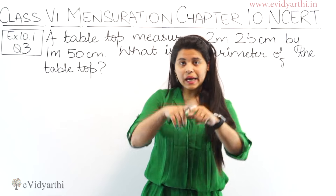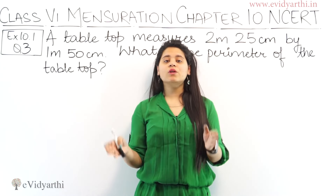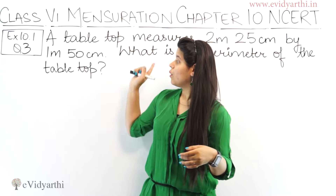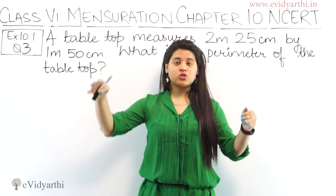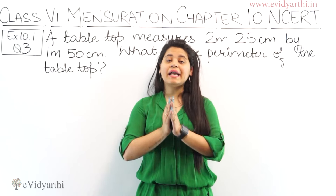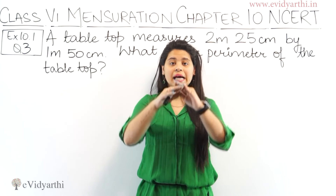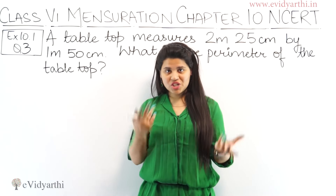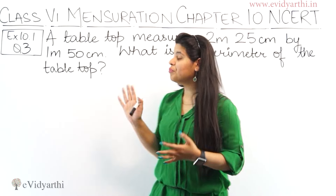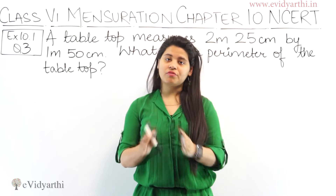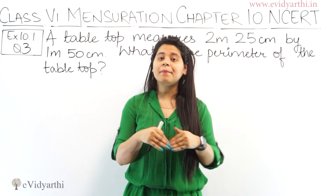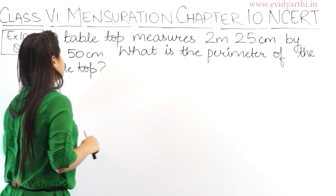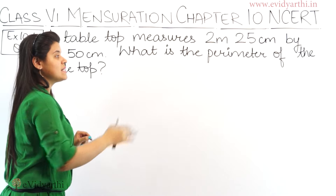The table top measures 2 meter 25 centimeter and 1 meter 50 centimeter. According to these measures, we can see that the table top will be in a rectangular shape. Now we have to find the perimeter of that table top. Here the length and breadth are given in both meters and centimeters.